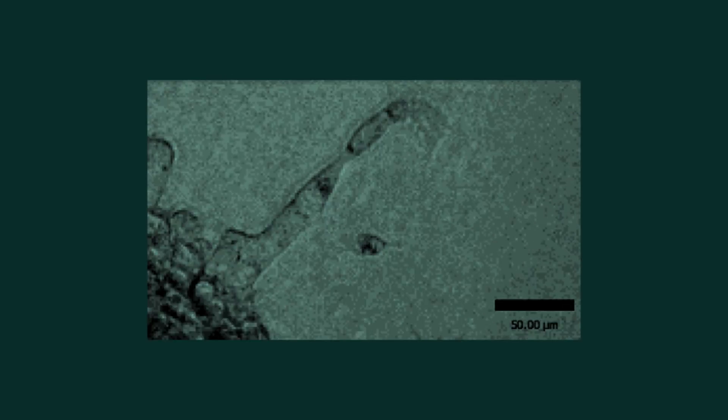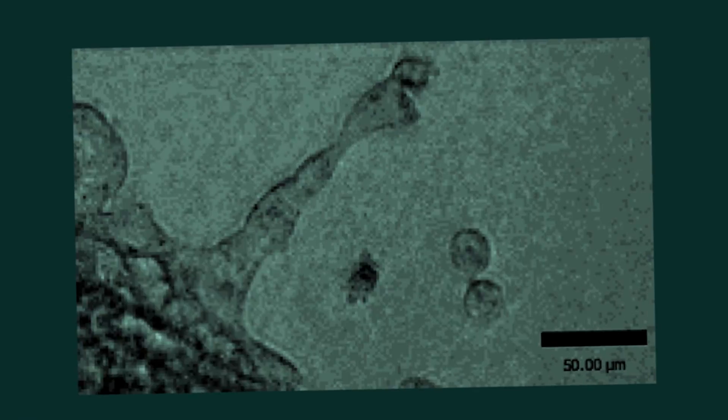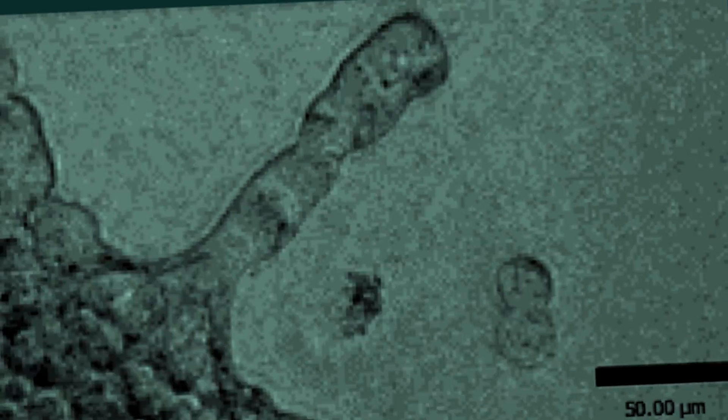Actually, some of those live cell movies that we initially got answered that question for us before we even had to do the experiments. We saw that when a leader cell detached or fell off or died unexpectedly, the followers could no longer move.